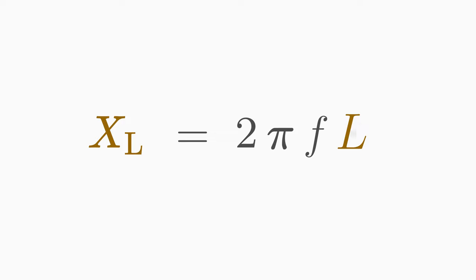As you can see from the formula, you can also use the inductance to adjust the reactance of the coil. Let's make an example. You apply 230 volts to a coil with an inductance of 500 mH.